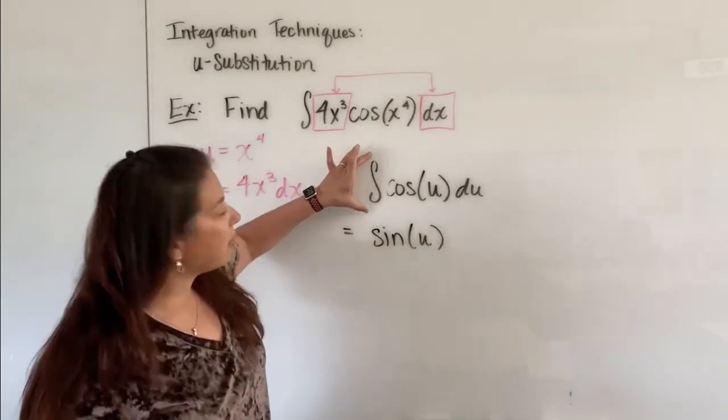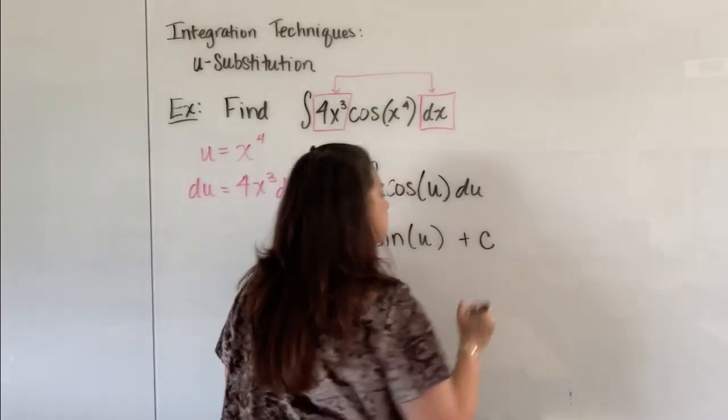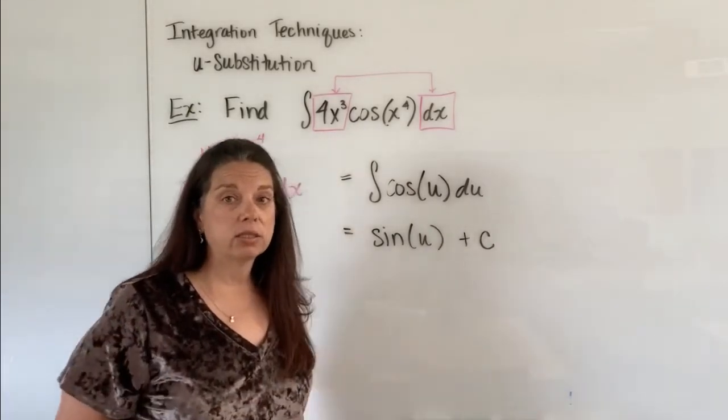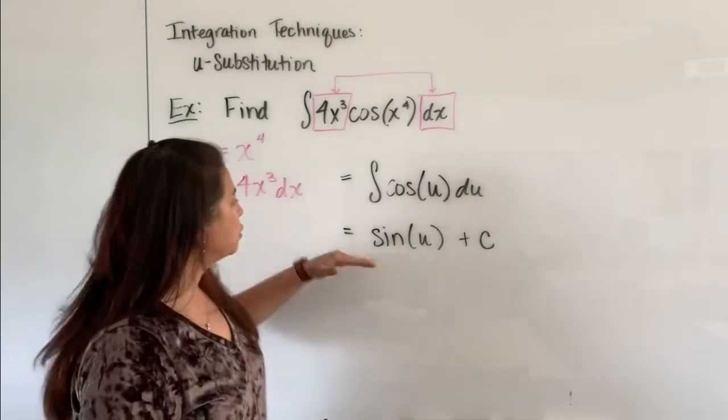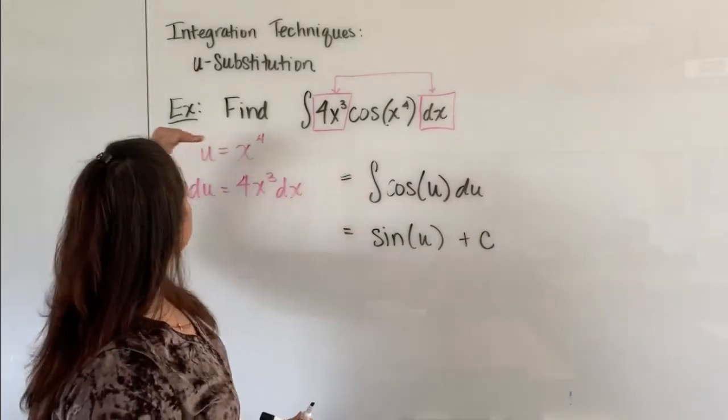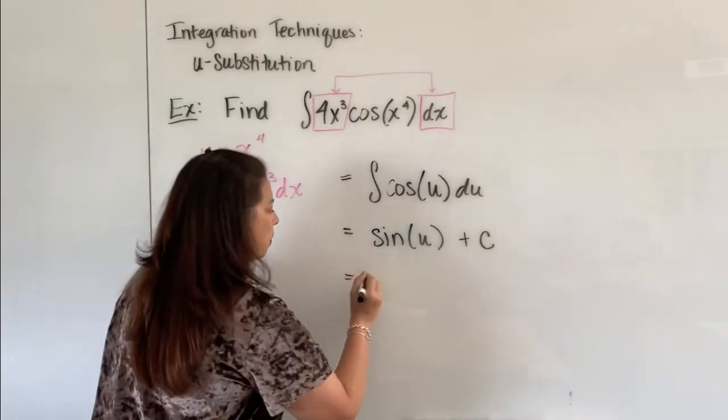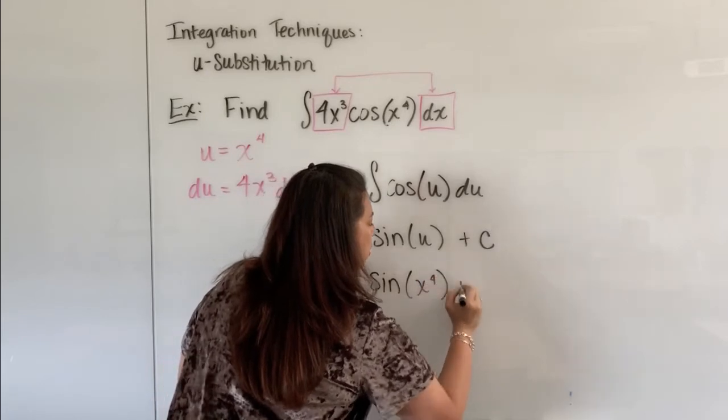Because I didn't have any boundaries here on my integral symbol, I have to add my c for a constant to account for that. Remember, we cannot leave our answer in terms of u's - that was a temporary fix. So what we now do is go back up and say, oh, u was x⁴. Let's put that back in here to report my final answer to be sine of x⁴ plus c.